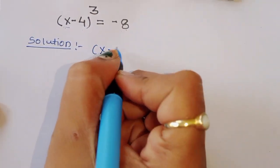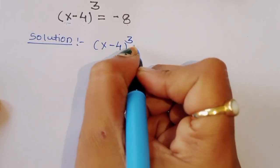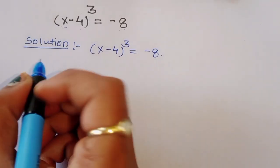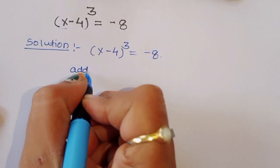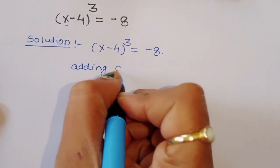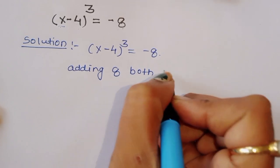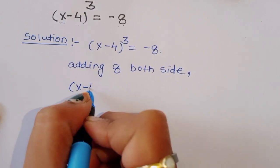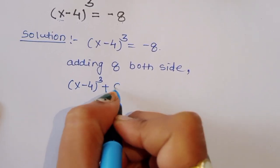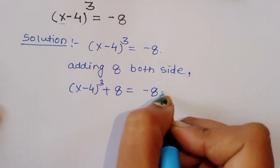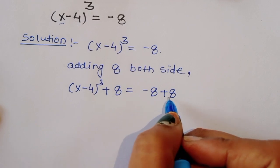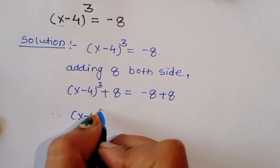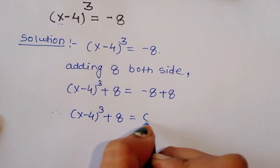We have x minus 4 raised to 3 is equal to minus 8. Now we can add 8 to both sides. Adding 8 to both sides, we will get (x - 4)³ + 8 = -8 + 8, so it will become 0. Therefore, (x - 4)³ + 8 = 0.